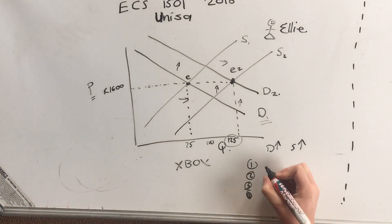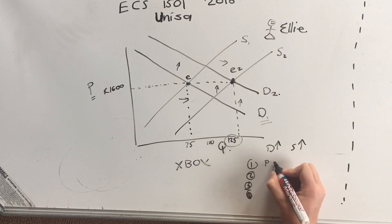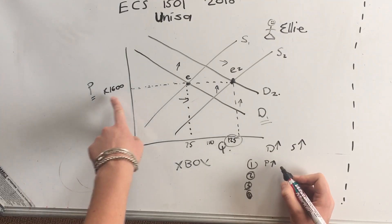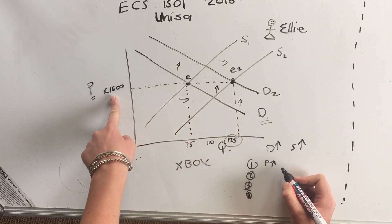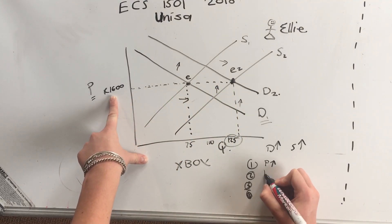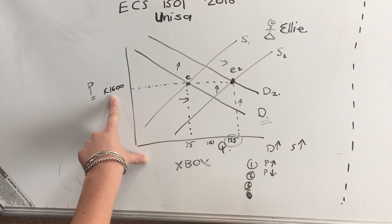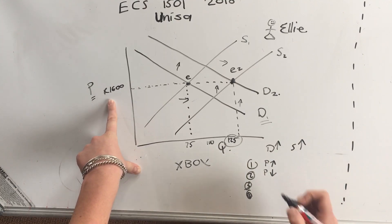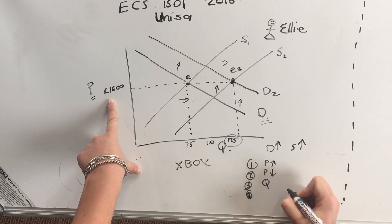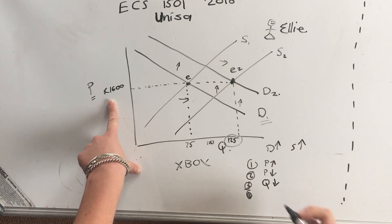Okay, so then they are going to say will the price go up. Now we can see there it's not going up, it's staying the same, or they can say will the price go down and the price is definitely not going down. Then they will say how about the quantity, is the quantity going down.